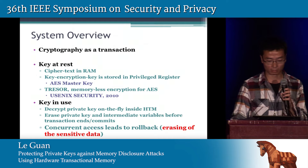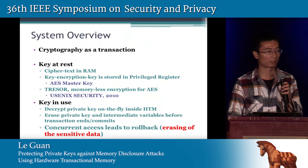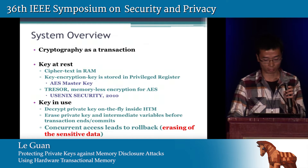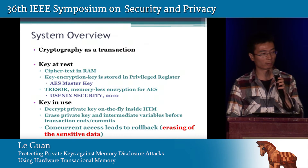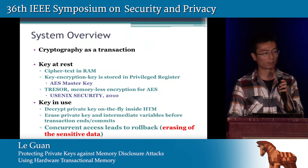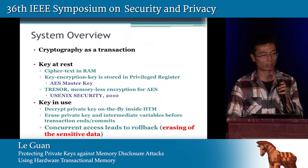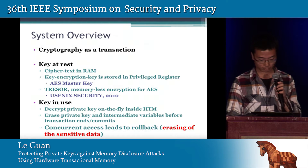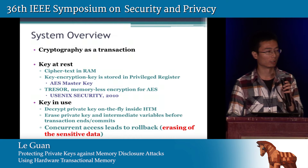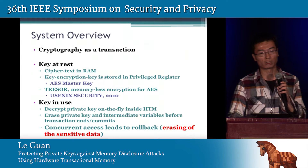The basic idea of our system is to implement cryptography as a transaction. When there is no cryptographic request, the key resides in RAM in ciphertext. The key to encrypt the private key is stored in a privileged register. To this end, we employ Trezor, a memory-less encryption solution for AES. When there is a cryptographic operation request, the key is decrypted on the fly inside the transaction memory. After the cryptographic operation and before the result is committed, we must manually erase the private key and all intermediate sensitive data.